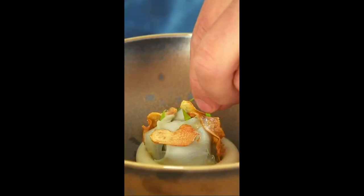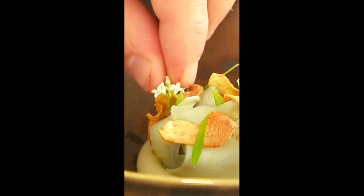Then add the crispy artichoke, woodruff leaves and flowers. And now finish it off with the horseradish and lovage sauce.